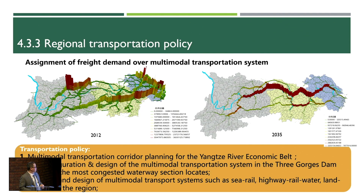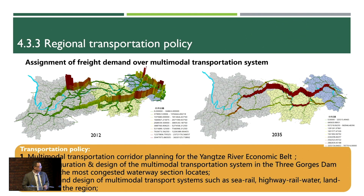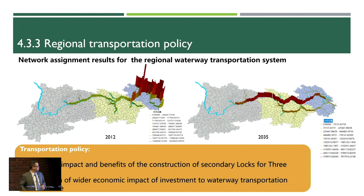We look at the assignment of freight demand over the multi-modal transportation system. The policies that can be tested include how we should plan the multi-modal transportation system over the Yangtze River Economic Belt to create a much more efficient transportation corridor system. There is also a bottleneck around the Three Gorges Dam — there is a big dam and ships have to go through the locks, which creates a lot of congestion. There are always questions about how we should configure and design that part of the multi-modal transportation system to solve the problem of significant congestion in waterway transportation at the Three Gorges Dam.